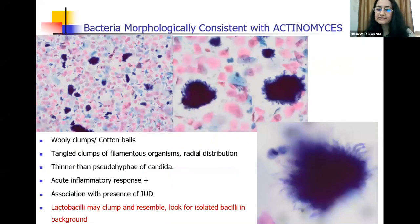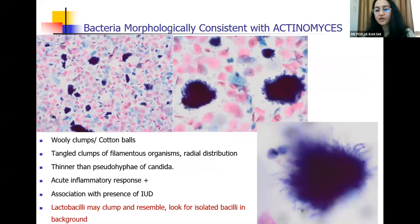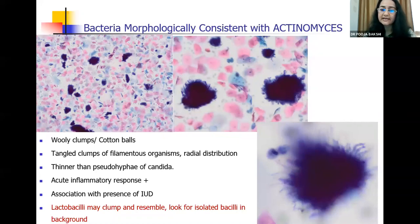The next organism we see is Actinomyces, and residents often get very excited when they see these cotton woolly clumps and cotton ball-like structures. However, many lactobacilli sometimes clump together to form these cotton ball-like structures and may be confused with Actinomyces. Look for isolated bacilli in the background — if you see isolated bacilli, it is unlikely to be Actinomyces. Actinomyces forms tangled clumps of filamentous organisms arranged in a radial distribution, which are thinner than the pseudohyphae of Candida and are long and filamentous.